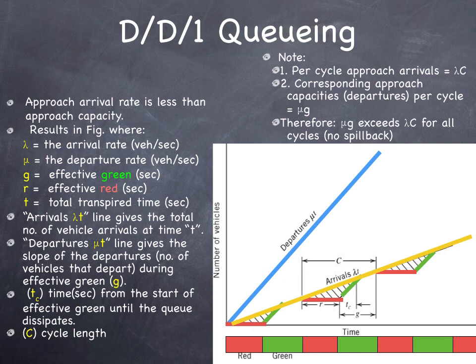We want to assume that the signals are uncoordinated, that arrivals are essentially uniform. If they were random, it wouldn't matter much because when the light is red, cars have to stop anyway. And even when the light is green, if there's a queue that's discharging, they have to stop.